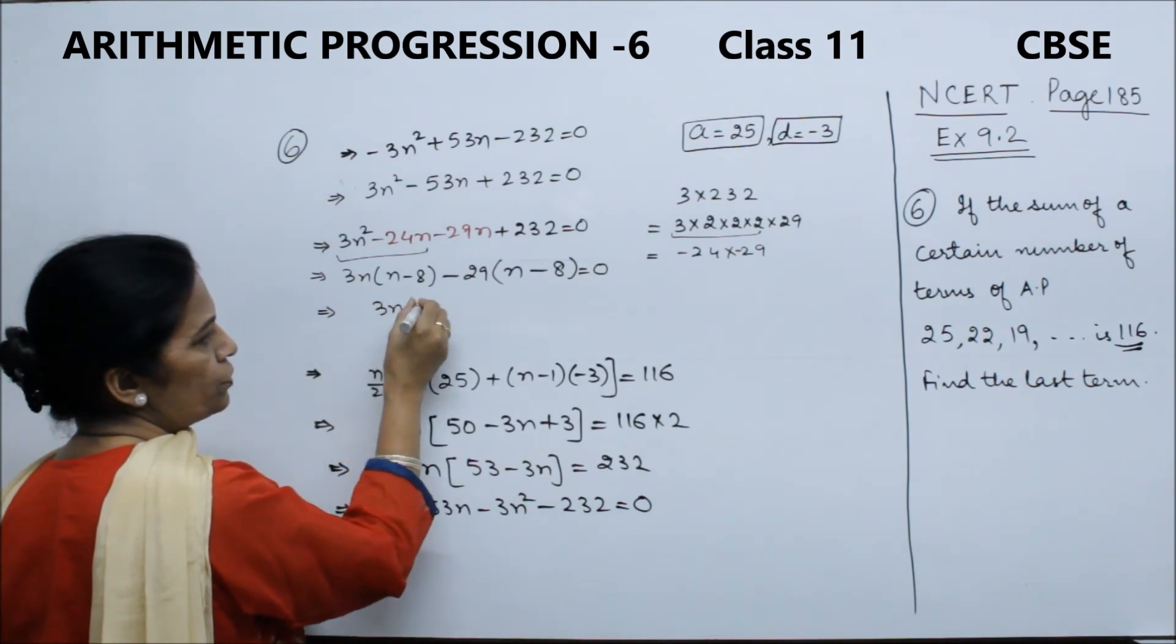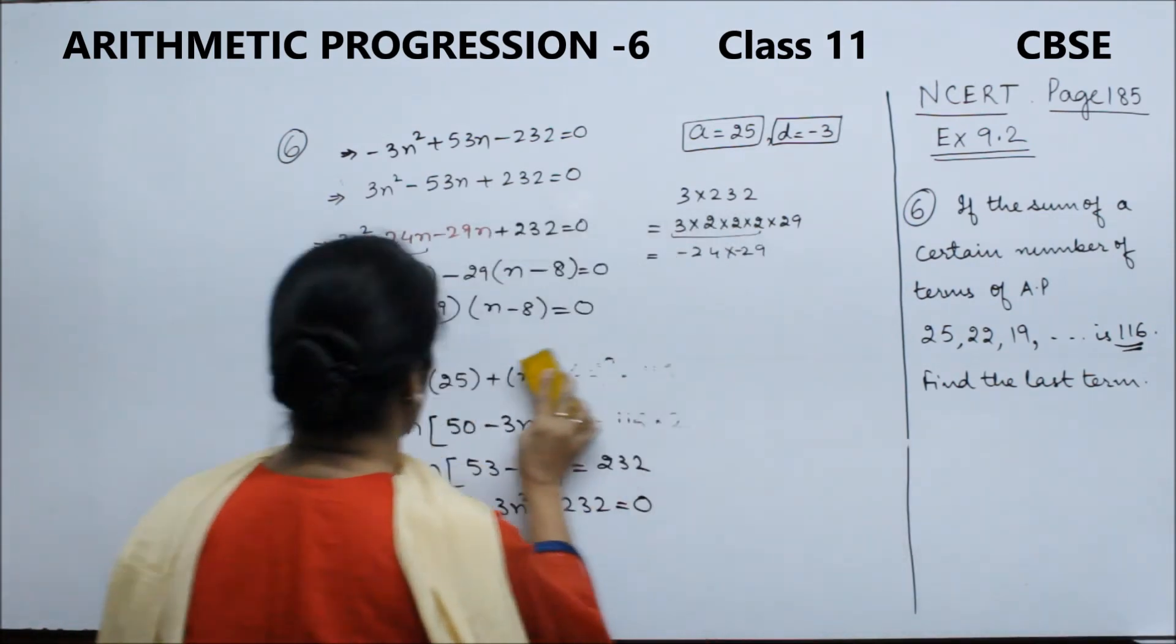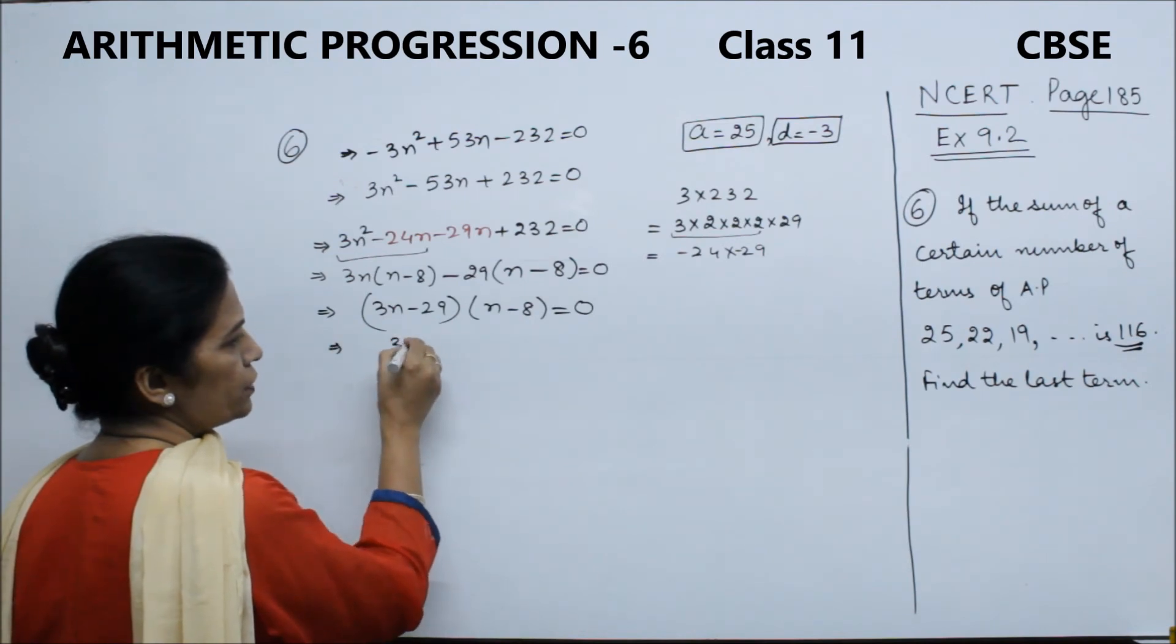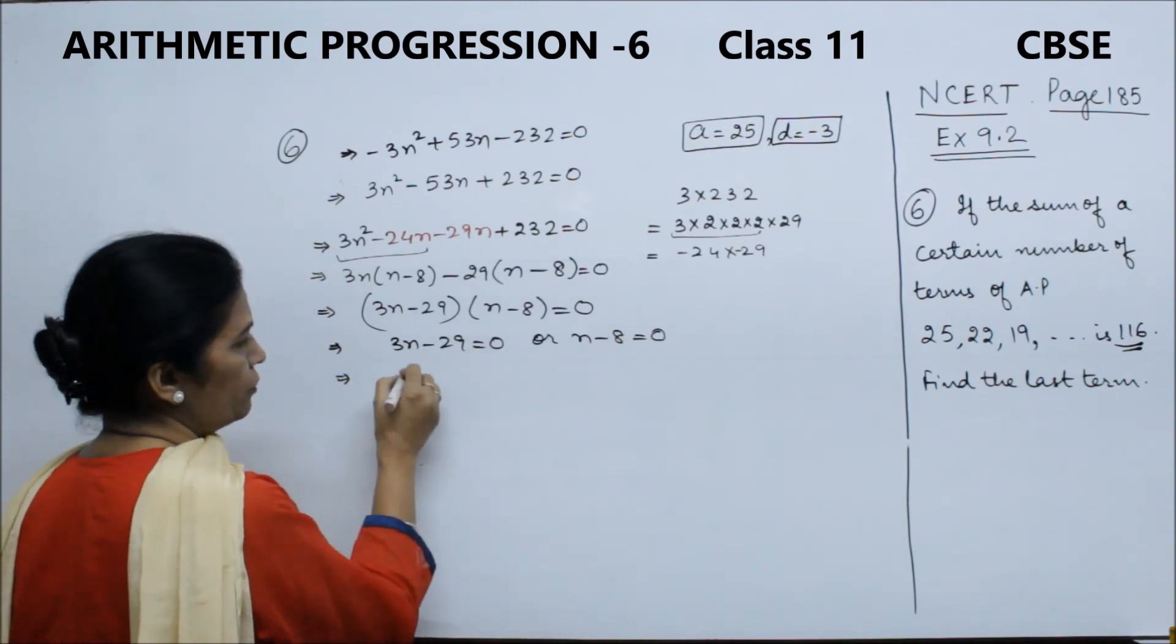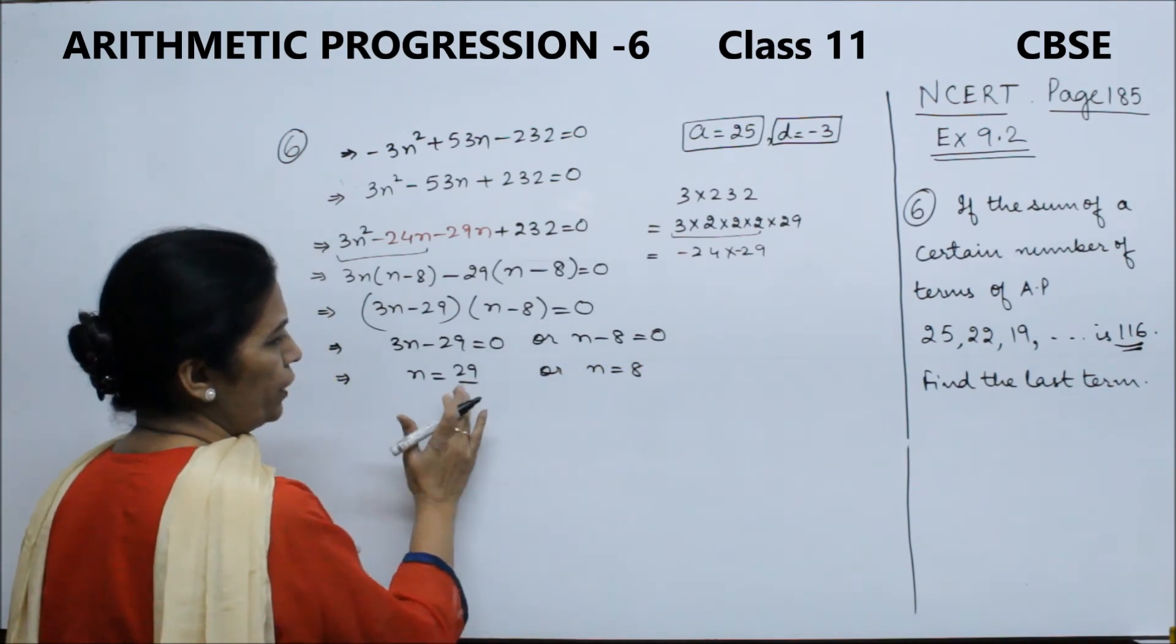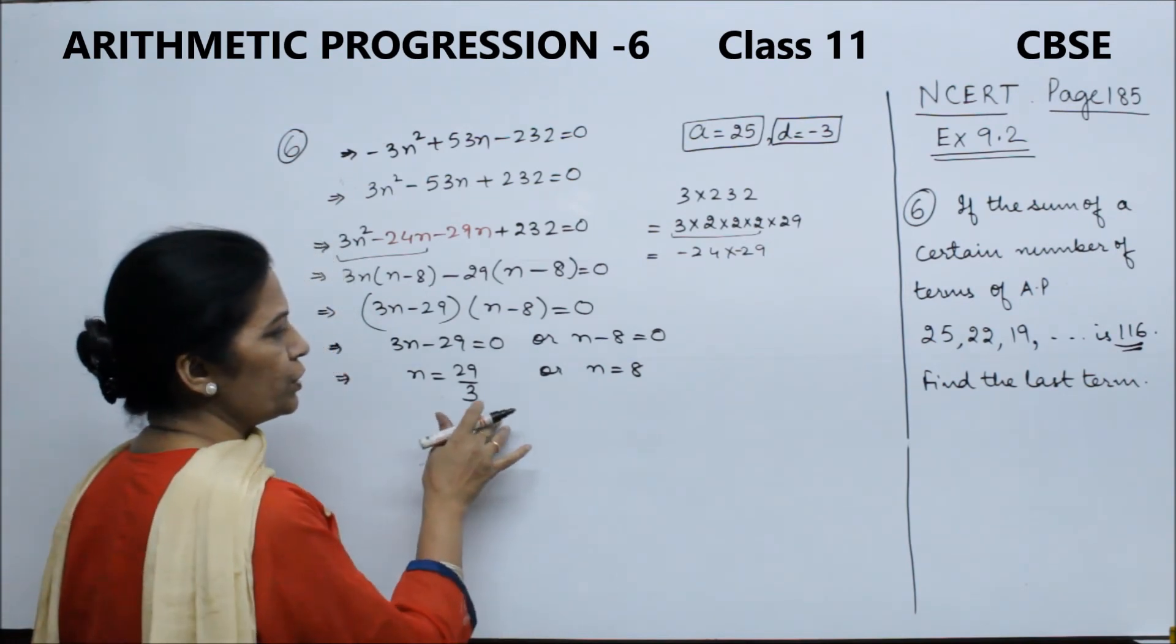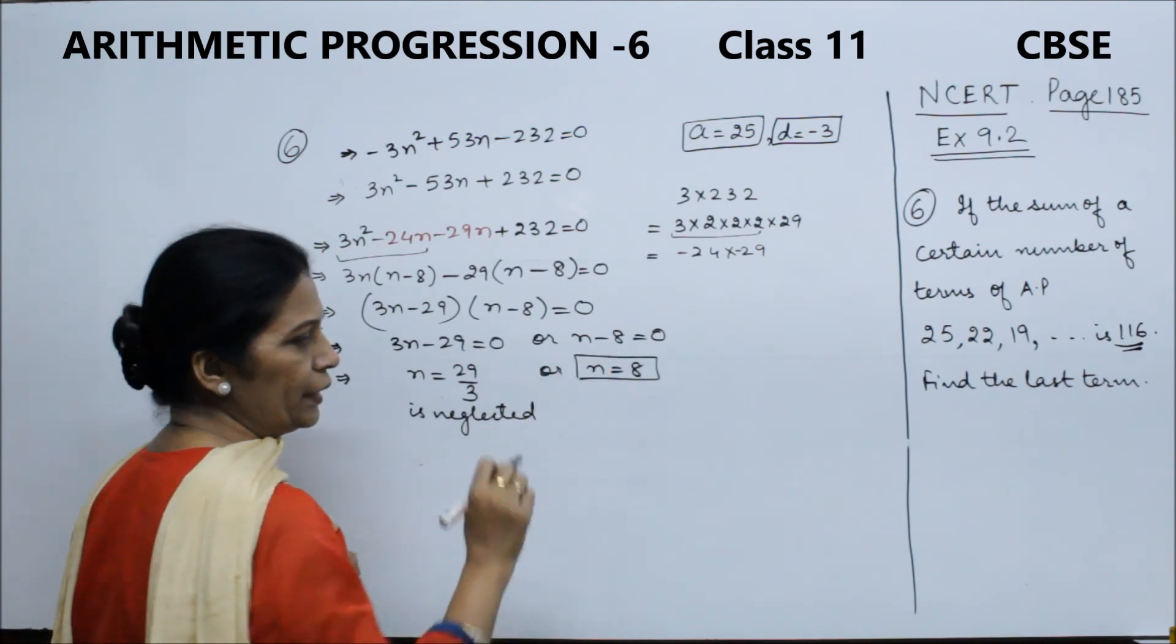Now we have factors. Product of two factors is 0, so either 3n minus 29 equals 0, or n minus 8 equals 0. From the first, n is 29 upon 3. But n cannot be negative or a fraction - it should be a natural number - so this is neglected. Therefore, n is equal to 8.